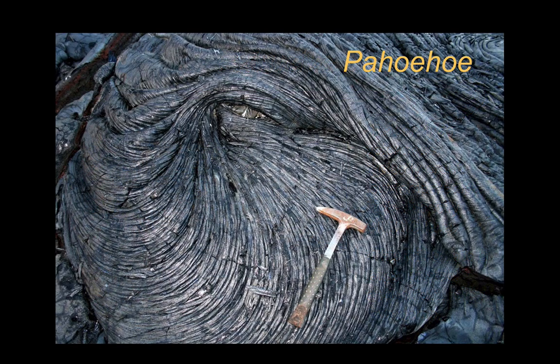The first feature to look at is pahoehoe. Pahoehoe is a feature we see on the top surface of a lava flow. It's a Hawaiian word and it refers to the ropey structure that we see in the top of a lava flow. The best way to explain this is to see a pahoehoe lava flow actually forming.